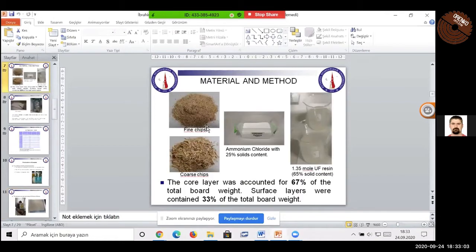Our materials here, fine chips for the surface layer and coarse chips for the core layer. We used for this study 1.25 mol urea-formaldehyde resin with 65% solid content, and ammonium chloride with 25% solid content, we used as a hardener.